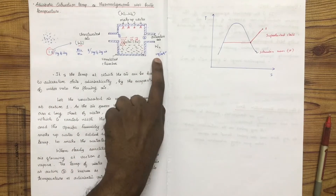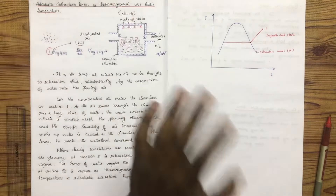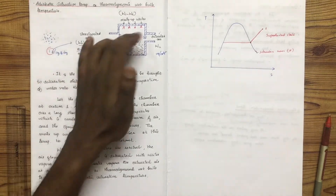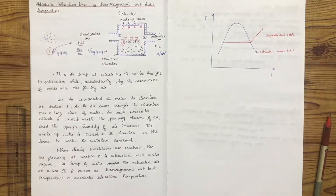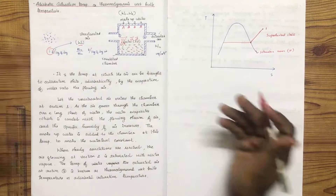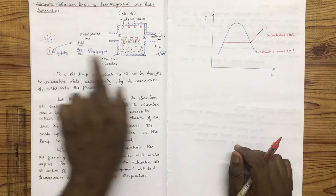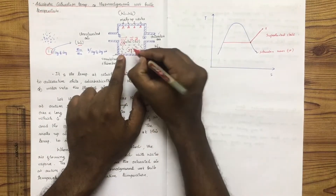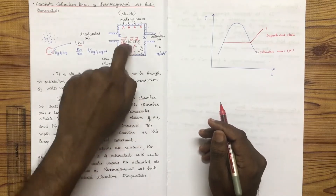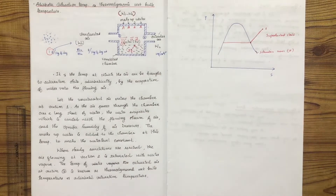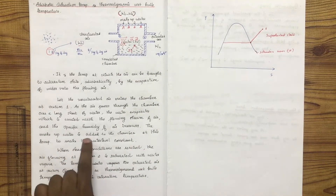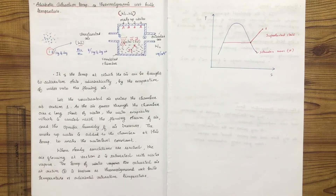At entry the specific humidity is W1; at the exit the air gains additional moisture, reaching W2. The difference between W1 and W2 represents the water added. The make-up water, equal to the W2 minus W1 amount, is added to the chamber at this temperature to keep the water level constant.